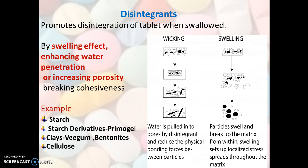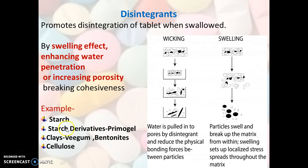Next is the very important excipient: disintegrants. For a tablet to dissolve, it should first disintegrate — that is, break into small fragments and then into granules. Disintegrants promote the disintegration of the tablet when swallowed. The mechanism may involve swelling effect, enhancing water penetration, or increasing porosity. In wicking, water is pulled into the pores by disintegrants, reducing physical bonding forces between particles. Particles then swell and break up the matrix from within, setting up localized stress which spreads throughout the matrix until the tablet disintegrates.